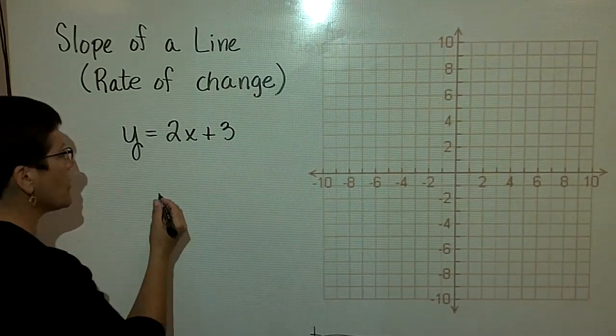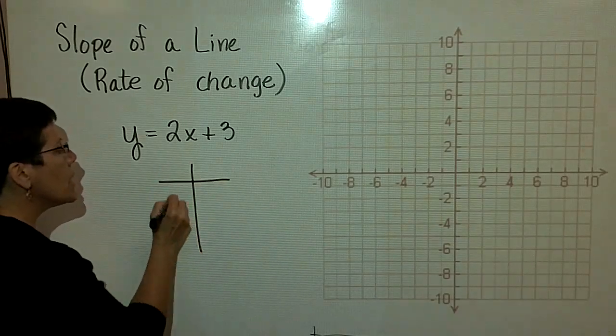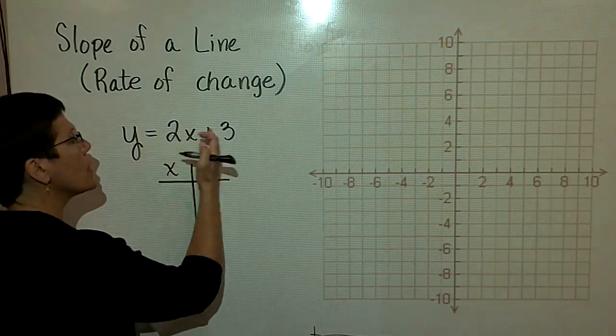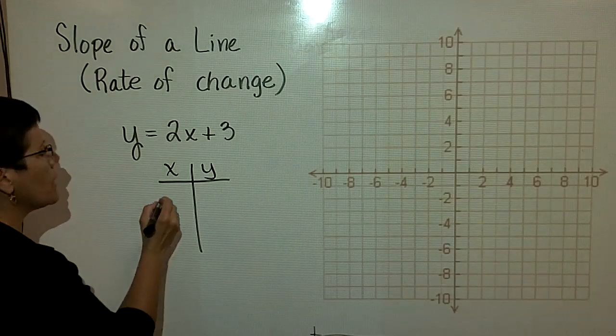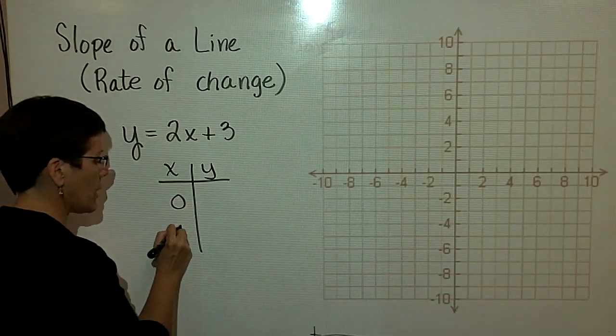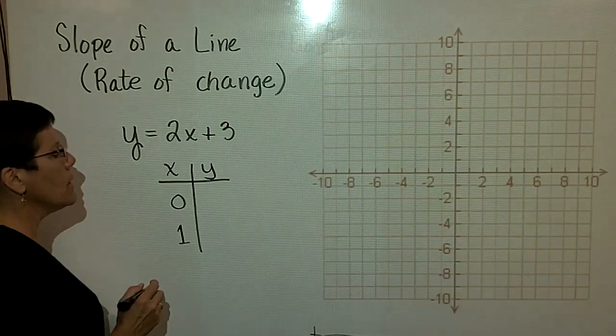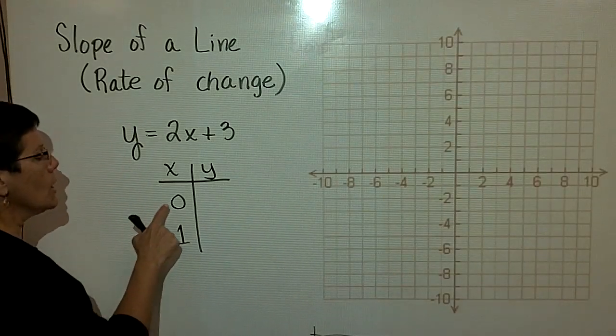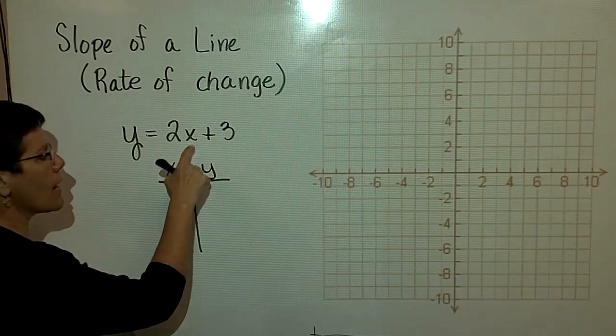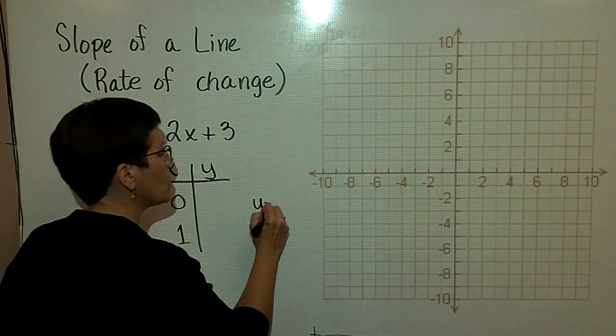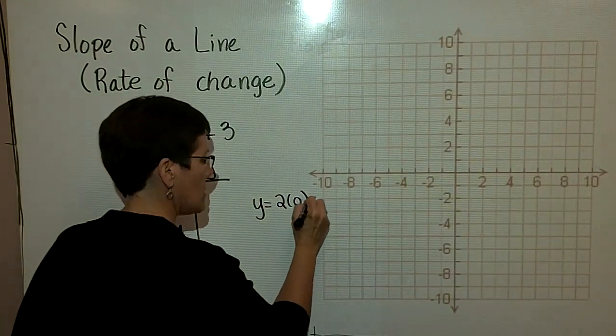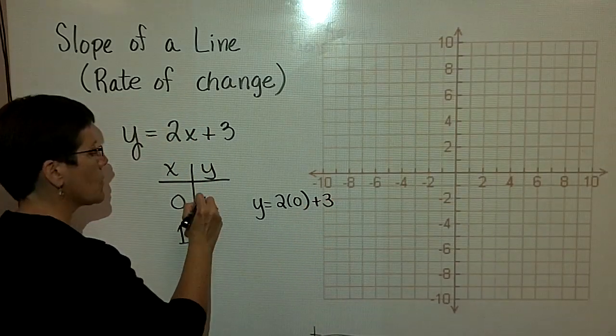Let's go ahead and look at this first the way you have understood it so far. Let's say that for this equation, we choose to pick a couple of values. I'm just going to pick two values. I really should be picking three to check my math, but I'm going to put in zero here for x. So y would be equal to 2 times 0, that's 0, plus 3. So that's 3.